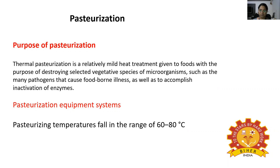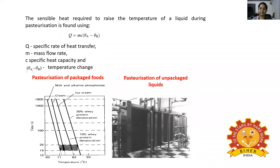Processing containers of food with a naturally low pH, such as fruits, or in which the pH is artificially low, for example pickles, is similar to canning and is often termed pasteurization to indicate the mild heat treatment employed. The sensible heat required to raise the temperature of a liquid during pasteurization is found using the formula q = mc(θe − θb), where q is the specific rate of heat transfer, m is the mass flow rate, c is the specific heat capacity, and θa minus θb is the temperature change.